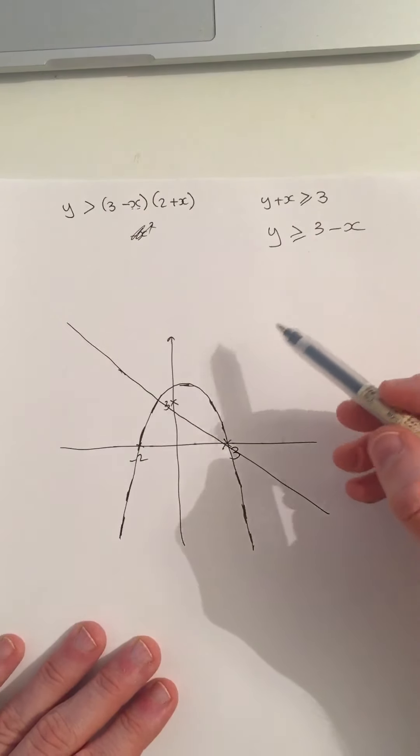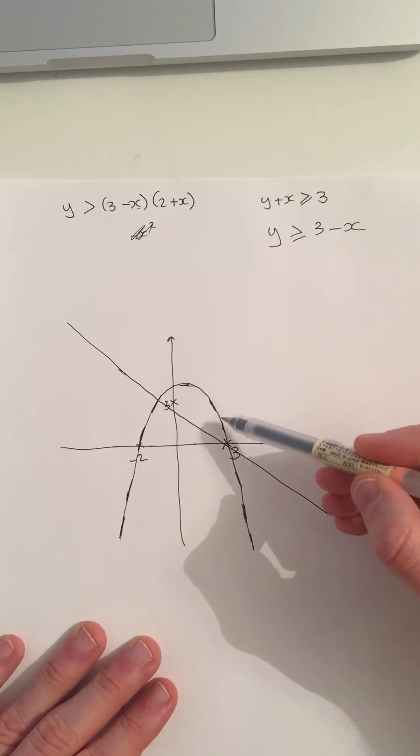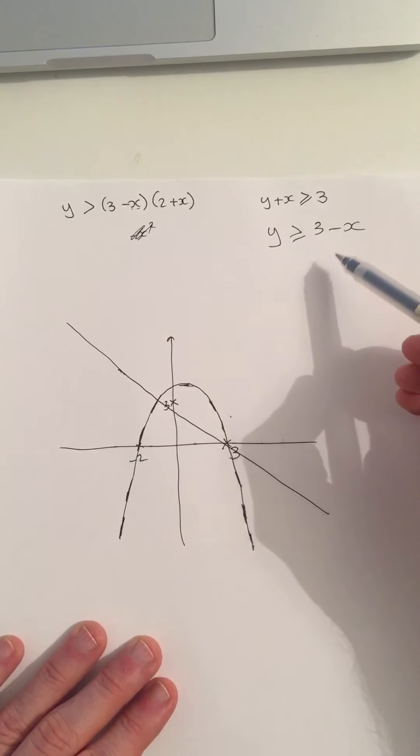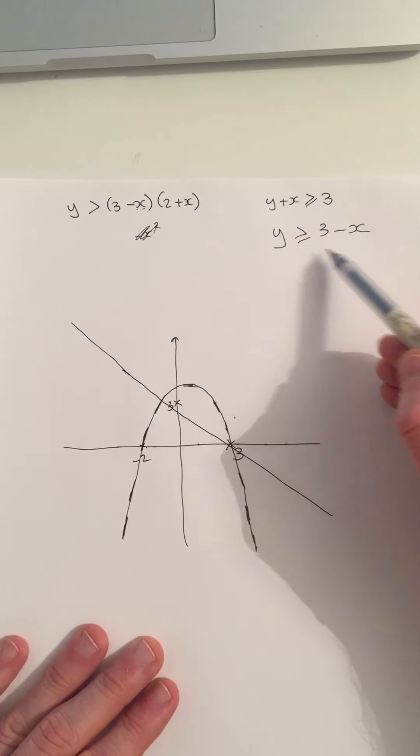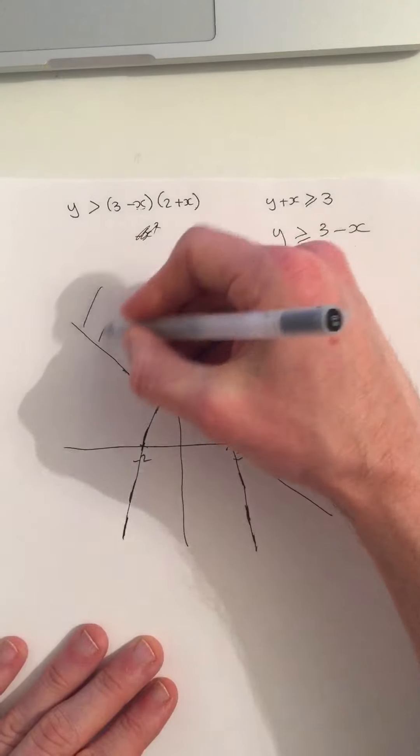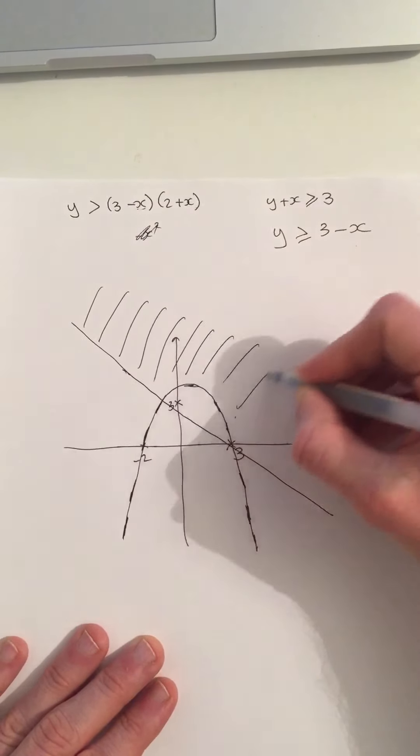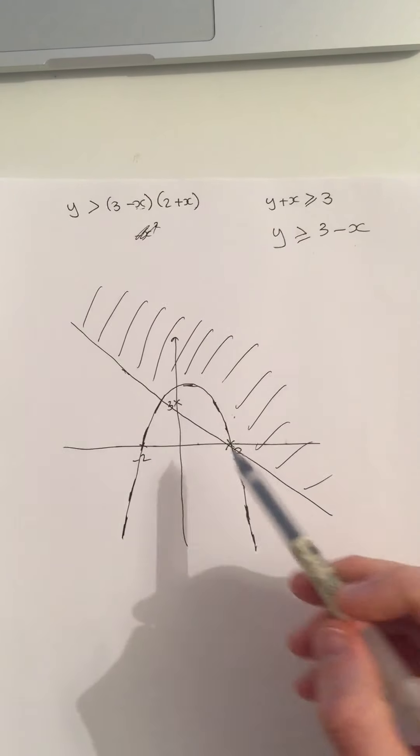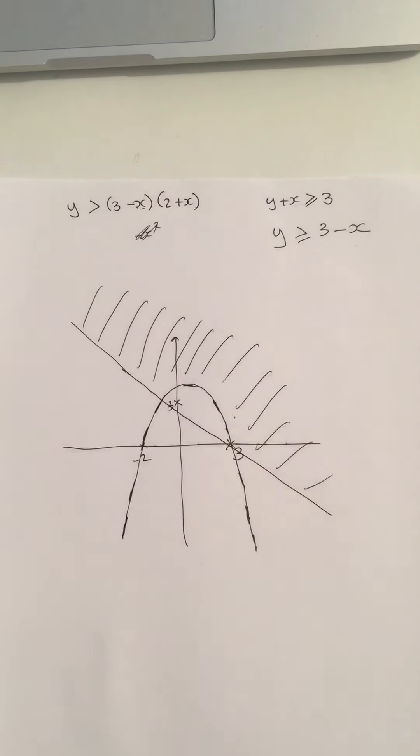So what we're saying is that the region I'm looking for has to be above the n and it has to be above the diagonal line I've just drawn. So it's all of this region here above both the n and the diagonal line. And that's how we do section B.